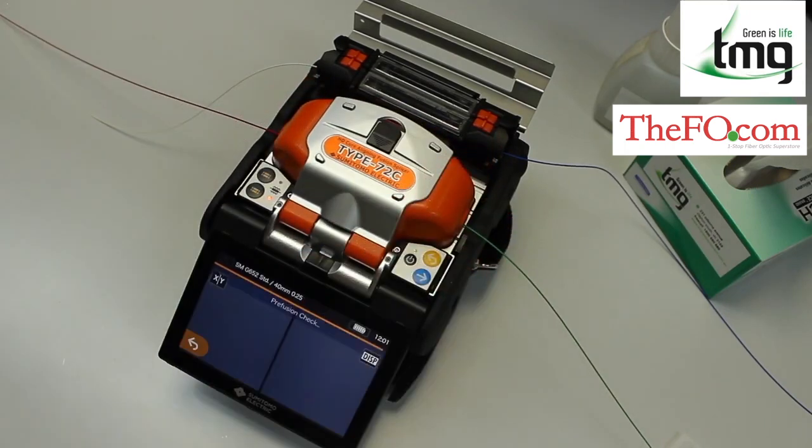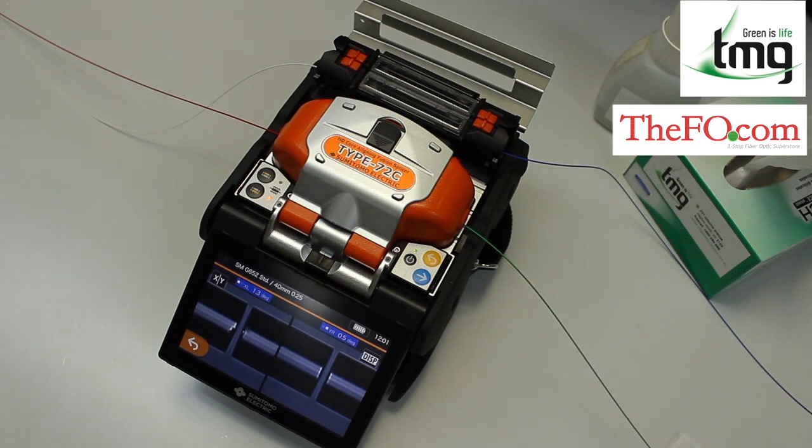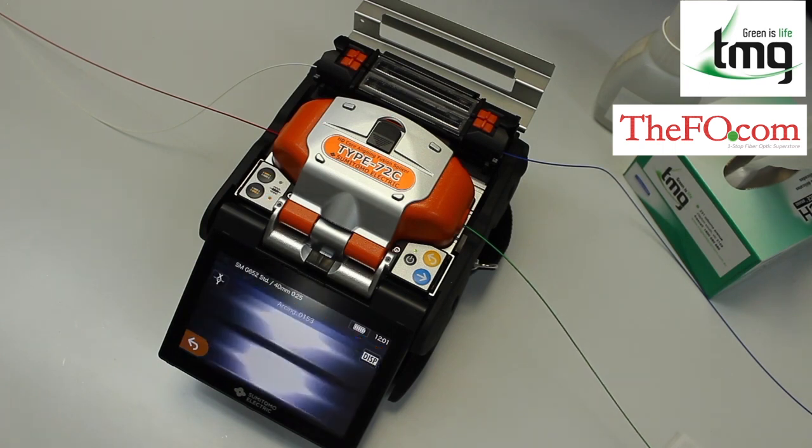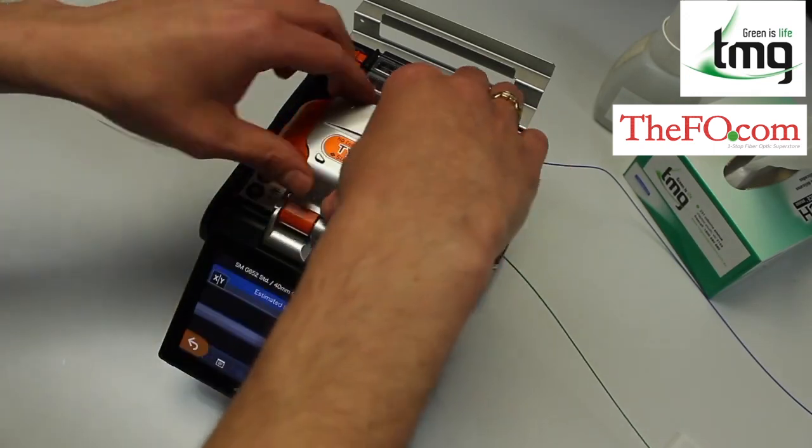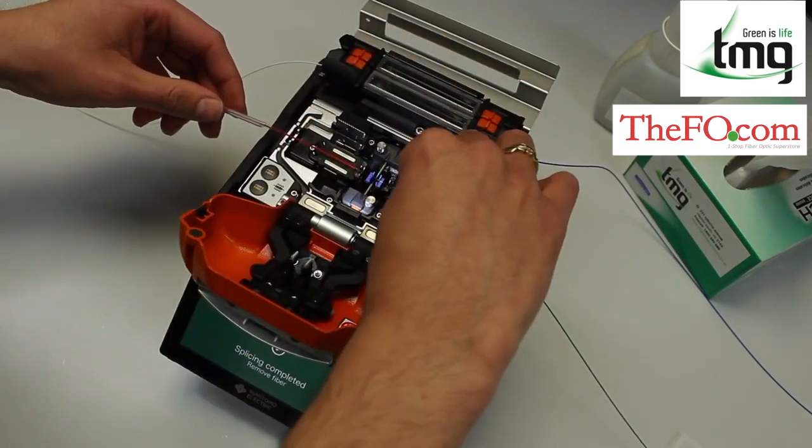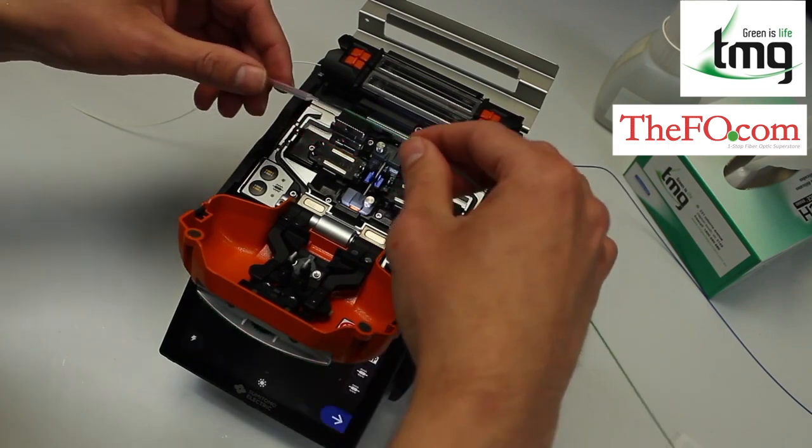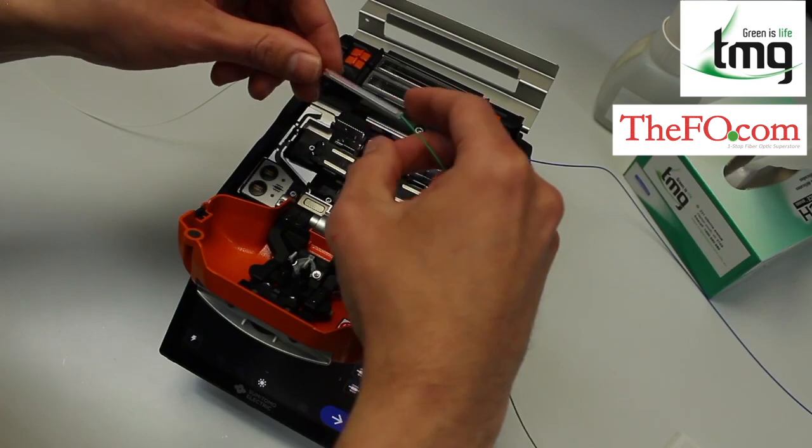Clamp it down, shut the lid and off it starts to do its next splice. Just carefully take it out, and we are now going to pop this into the second oven.